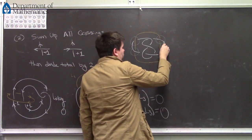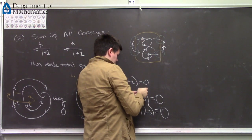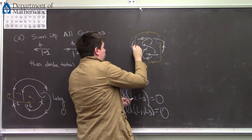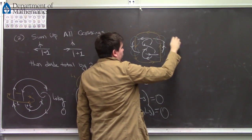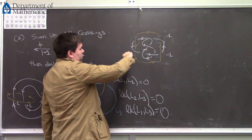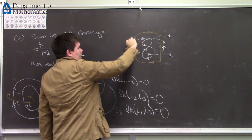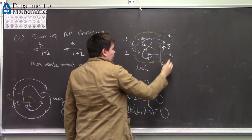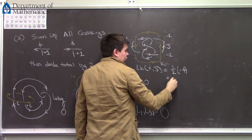You look at all crossings between the two components: this crossing, this crossing, this crossing, and this crossing. In order to calculate this, I need to give them some orientation. On this crossing, you get a minus one — it disagrees with my right hand. This crossing down here: minus one. This crossing: minus one as well. And this crossing right here: also a minus one. So the linking number between k and j comes out to be half of negative four, which is negative two.